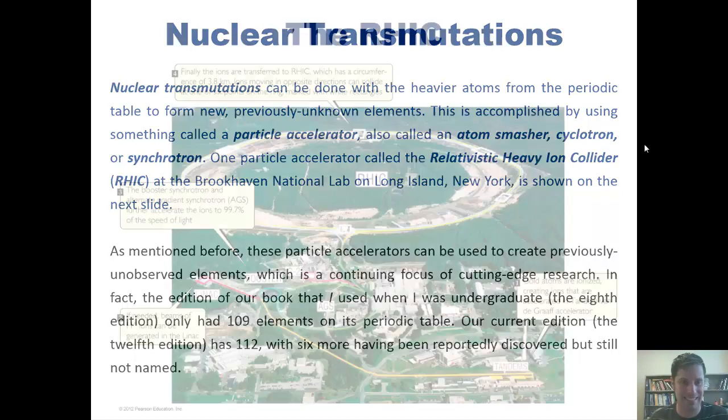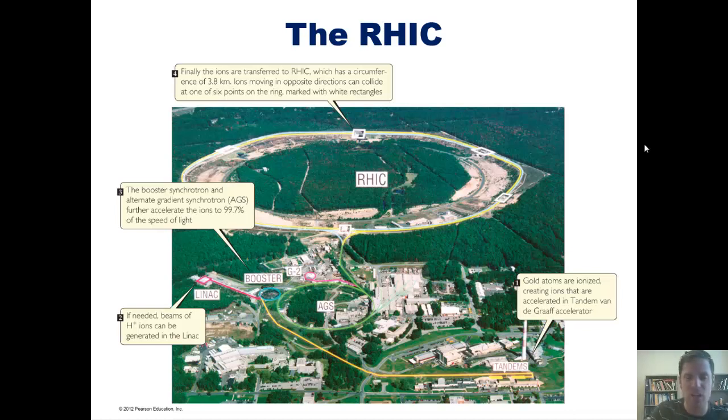Here, for your reference, is a picture of the RHIC. If you'd like, you could pause the video here and read each of the stages of particle acceleration as this figure summarizes. One thing you'll notice looking at this figure is that the actual size of the loop used here in the particle acceleration is very, very large. This one has a circumference of 3.8 kilometers, and there is at least one other particle accelerator that's even larger that I'll talk about momentarily. This huge size is required in order to get those elements to be sped up at a fast enough speed. They're almost approaching the speed of light so that when they collide into each other, they can be transformed into other elements.